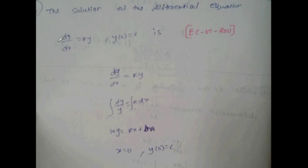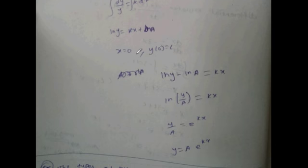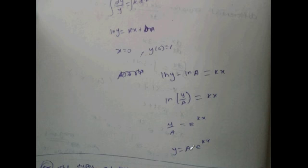Solution of dy/dx = ky with y(0) = c (EC 2011). Integrating both sides: ln y = kx + ln a. Applying boundary condition x=0, y=c. Then ln(y/a) = kx, so y = a·e^(kx). This is the answer.